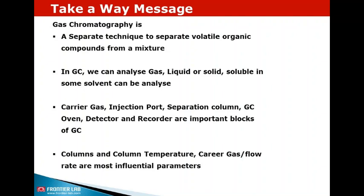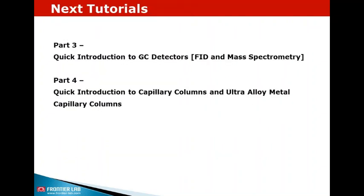Carrier gas, injection port, separation column, GC oven, detector, and recorder are important blocks of GC. Column, column temperature, carrier gas, and carrier gas flow rate are the most influential parameters to influence the separation of compounds from a mixture.